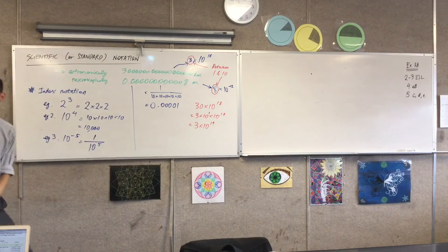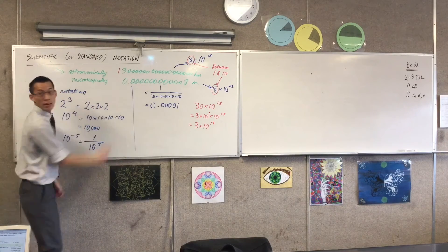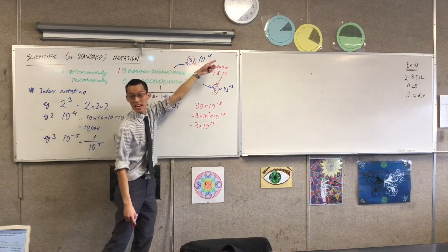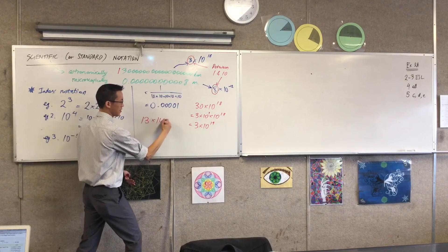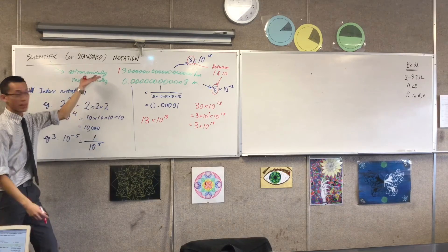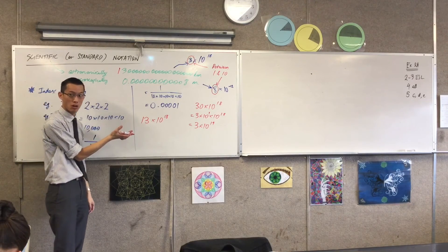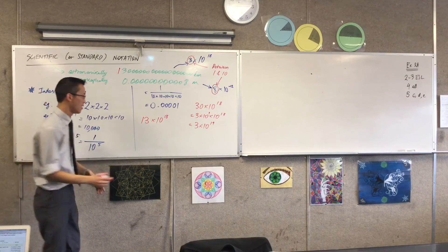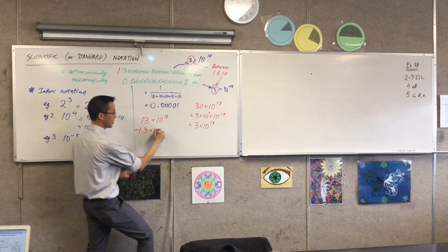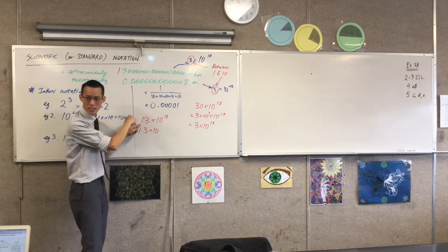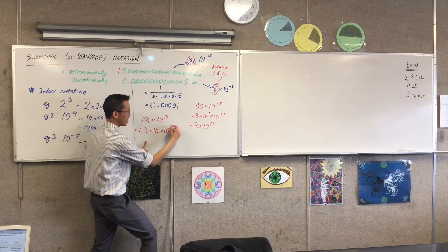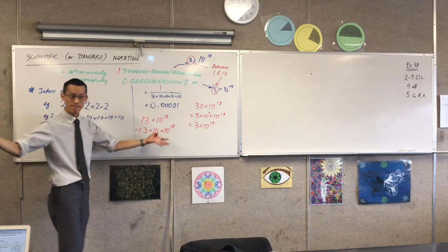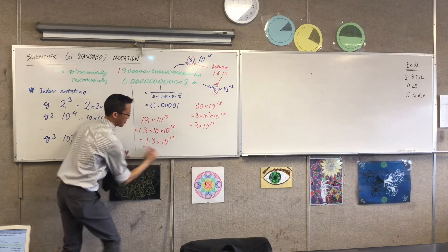What if instead of an 8, it's like a 13 — what would you do? A way I could do this is to say: instead of 3 times 10 to the 18, it should be 13 times 10 to the 18. But again, this is not scientific notation because it's not between 1 and 10. So I need to divide this number by something to make it between 1 and 10. I'm going to say it's 1.3 times 10 — you can verify it in your calculator. There's already that 10 to the 18 at the back, so now I've got 18 tens there and 1 more here — in total, 19 tens. So this last line, that's scientific notation.